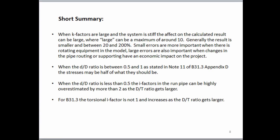The B31 codes in their respective Appendix Ds currently state that K factors for branch connections are equal to 1 for all branch connection types and directions. WRC 329 emphasized that when K factors are large and the system is stiff, the effect on the calculated stress results can be large. We want to use FEA tools to take advantage of these large differences when we have high K factors — large in this case meaning loads that can be overestimated by 10 times. More typically, loads will drop by between 20 and 200 percent or may increase between 20 and 200 percent. These smaller load errors are more important when there's rotating equipment in the model, but load errors can also be important when they result in changes in pipe routing or supporting that have an economic impact on the project.